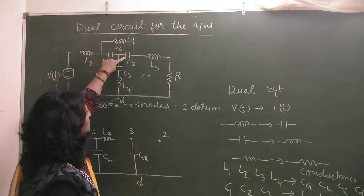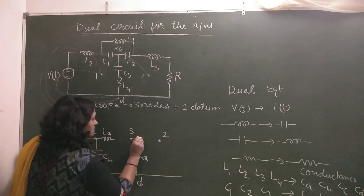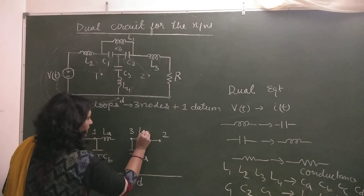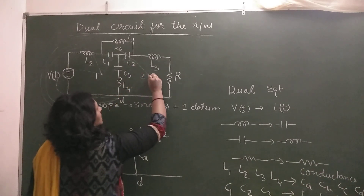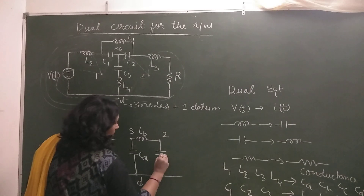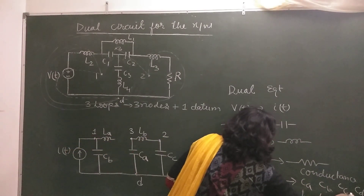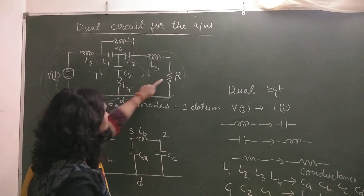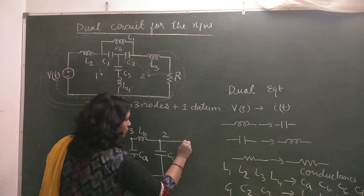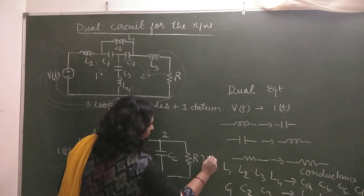Next we come to C2, which is lying between nodes 2 and 3. Since it is a capacitor, I have to draw an inductance, and for C2 that is LB. And L3 is lying between node 2 and the datum node. Between 2 and datum there is an inductance, so I have to draw a capacitor — for L3 I will draw CC. The next element is this resistance, which is again falling between 2 and D, so I will draw a conductance — its value remains the same, only the unit changes to mho.